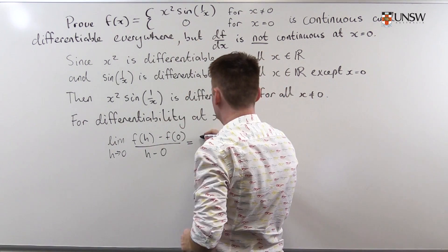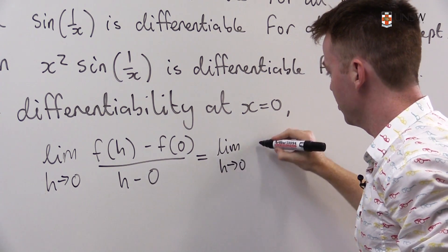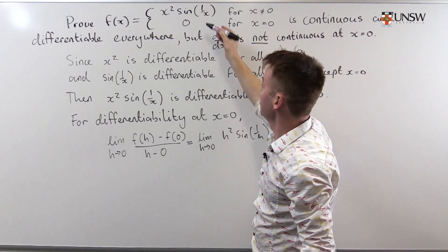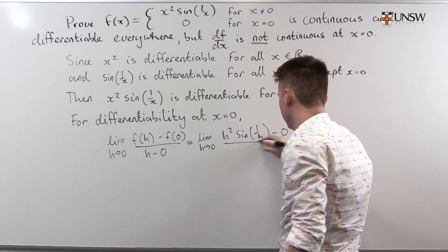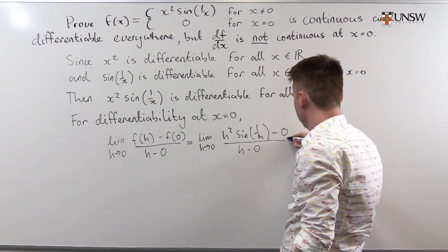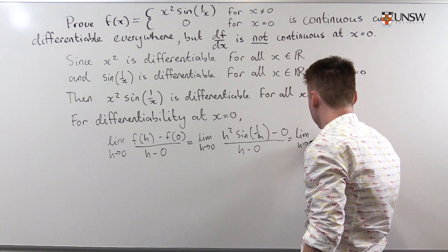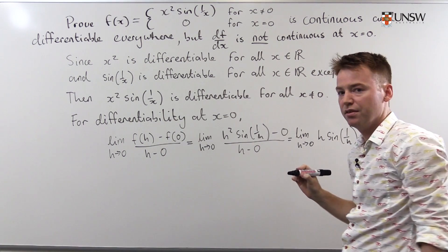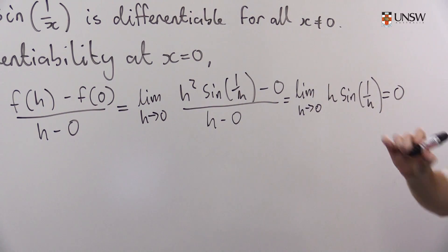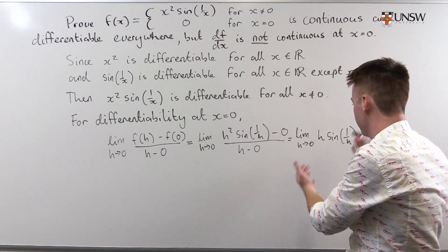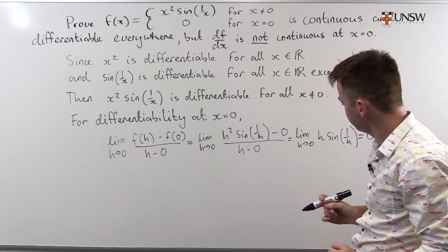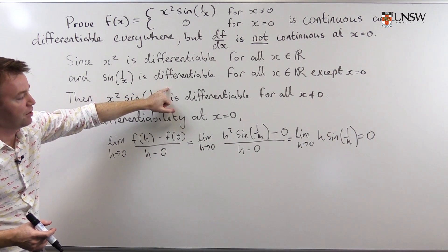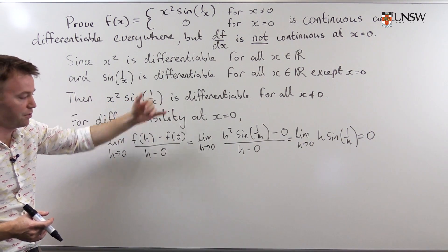That limit is equal to the limit as h approaches 0 of h squared sine of 1 over h minus f(0), which is just 0, over h, which equals the limit as h approaches 0 of h sine of 1 over h. As we know, this is equal to 0 — and if you didn't know that already, you could use the pinching theorem to deduce it. So this function is differentiable at all values of x, including at 0.